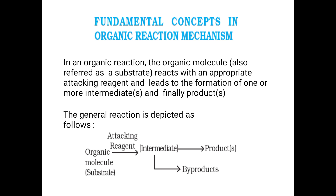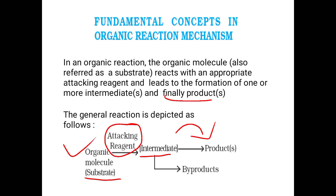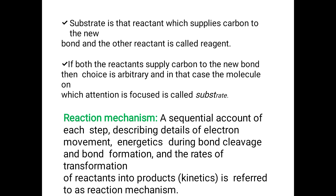So this is all about isomerism. We will now see fundamental concepts in organic reaction mechanism. In an organic reaction, the organic molecule reacts with an appropriate reagent and leads to the formation of one or more intermediates and a final product. The organic molecule is known as the substrate and it reacts with the reagent. The substrate is the reactant which supplies carbon to the new bond.